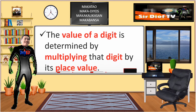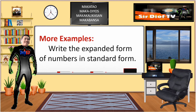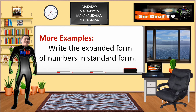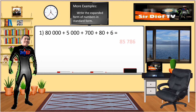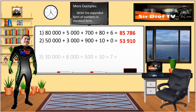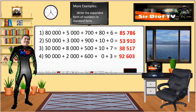The value of a digit is determined by multiplying that digit by its place value. More examples — write the expanded form of numbers in standard form. Number 1: 80,000 + 5,000 + 700 + 80 + 6 = 85,786.